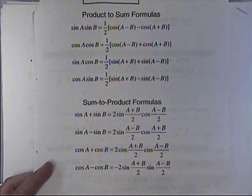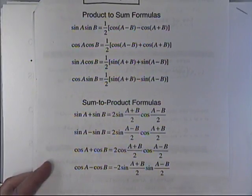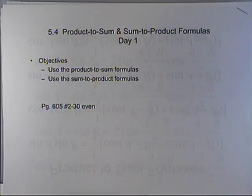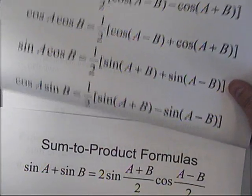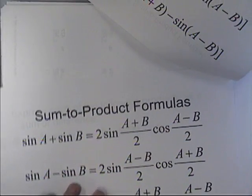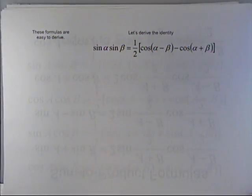These are called product-to-sum and sum-to-product formulas. They look like this. The first ones we're going to use — we're actually going to derive these first. Here's a copy of all those formulas if you lost your main packet from the first couple pages. Deriving this means we're going to use formulas that we already know in order to come up with a formula that we need.